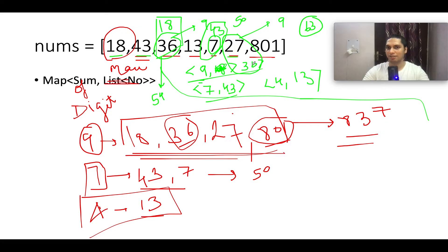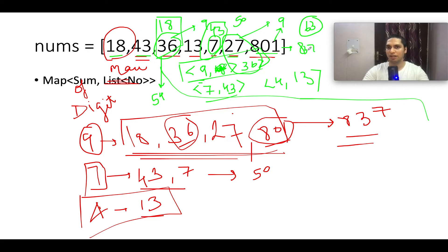We select the maximum between 36 and 27; 36 is the maximum, so the map entry for key 9 remains 36. Next is 801, digit sum 9. We check the map — entry is 36. 36 + 801 = 837, which is the fourth candidate. After iterating the entire array, the maximum value identified was 837 from elements 801 and 36.